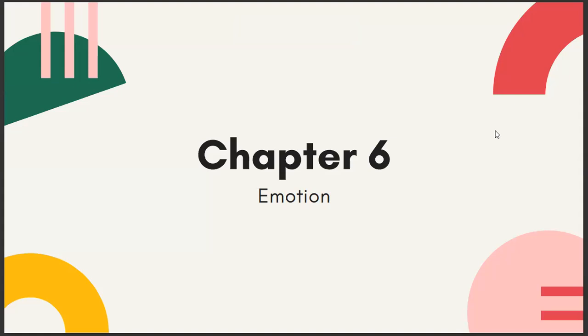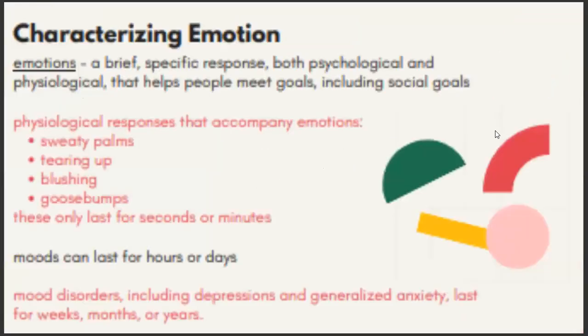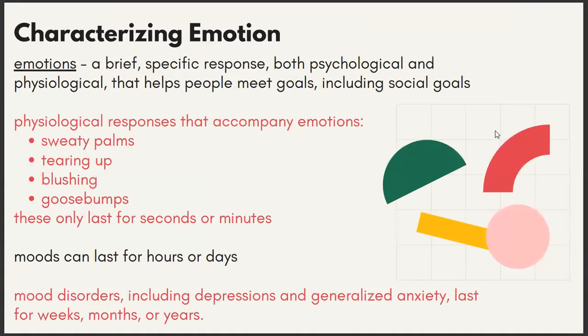Chapter six is over emotions. When talking about emotions, I want to characterize what an emotion is and how it's different from moods. A lot of us use these words interchangeably, but there is a distinct difference. Emotions are brief, specific responses — both psychological and physiological — that help people meet goals, including social goals. Emotions affect us psychologically because they change the way that we think and the way that we feel.